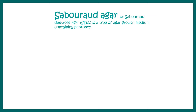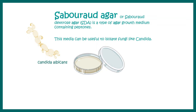We can also talk about Sabouraud's agar, which is used for the isolation of fungi such as Candida albicans. This is frequently used in medical laboratories to isolate fungi rather than bacteria, making it another kind of selective media.